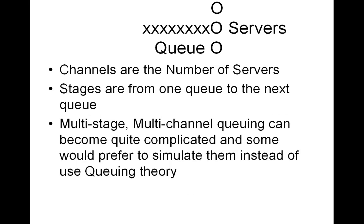First, some definitions. The X's in the little diagram are the queue, and the O's represent the servers. The channels are the number of servers. The stages go from one queue to the next queue, so you could have a whole series.